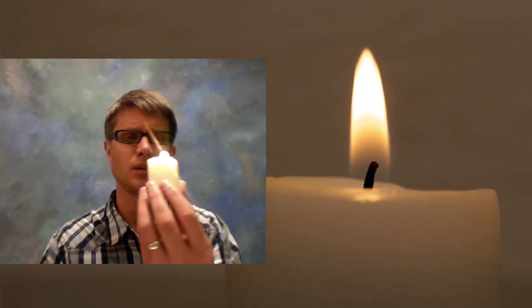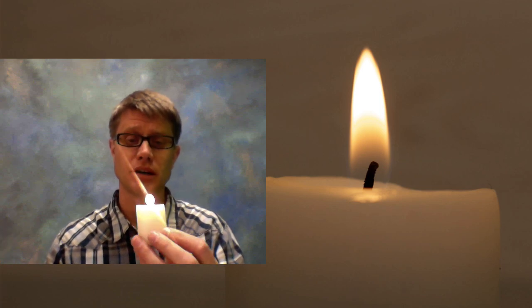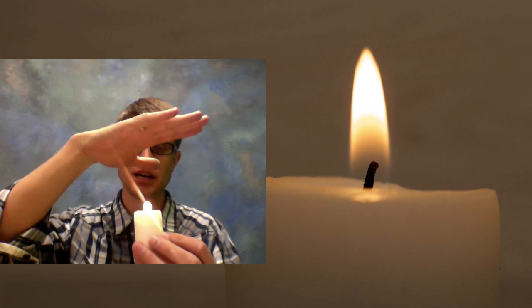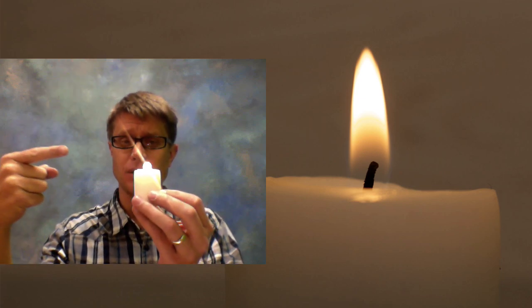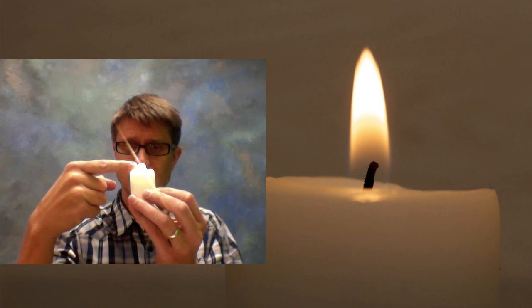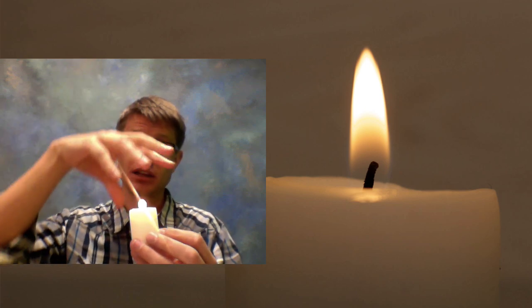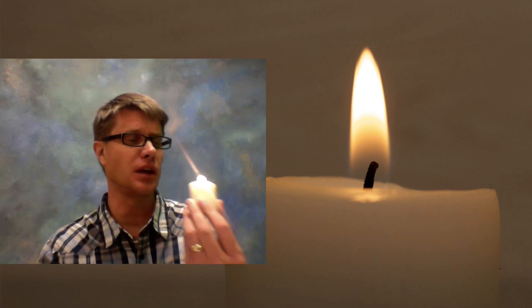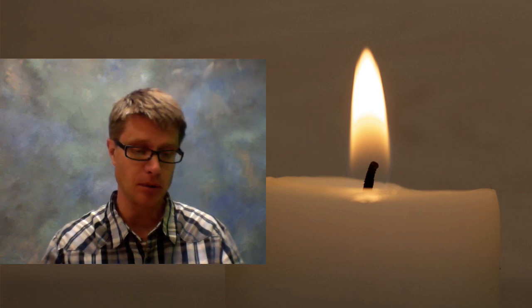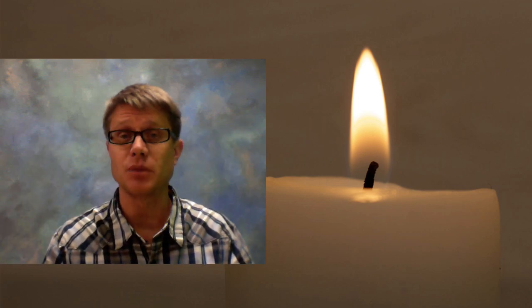Why does a candle flame look the way it does — pointy at the top but not on the sides? The reason can be shown with the touch test: if I move my hand above the candle it gets incredibly painful quite far away, but from the side I can get really close. The heated gas moves upward because heated air becomes less dense and rises. Interestingly, if you lit a candle in the space shuttle, you'd get a spherical ball of flame because there's no convection — it's not that there's no gravity, but that everything is falling together with the shuttle.